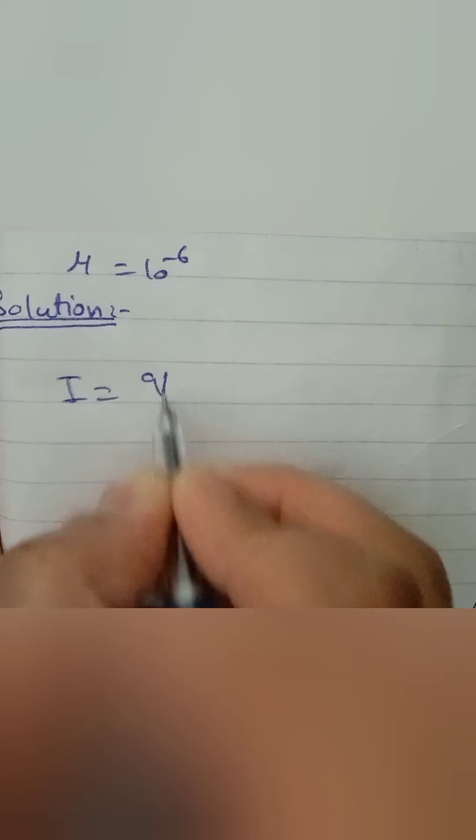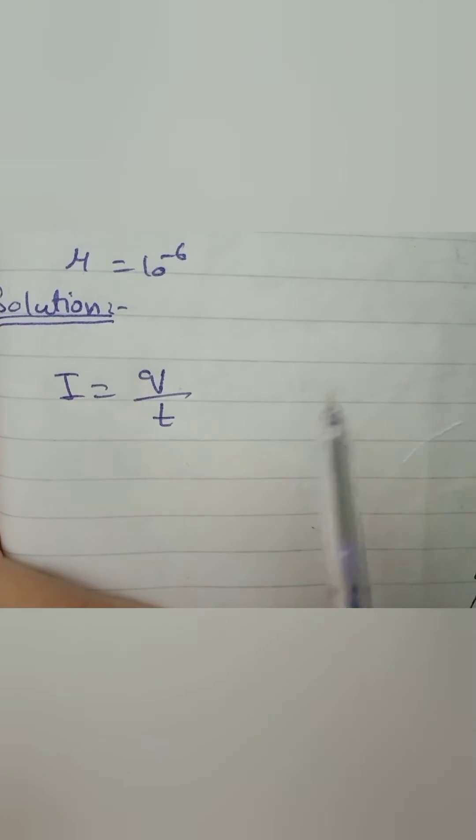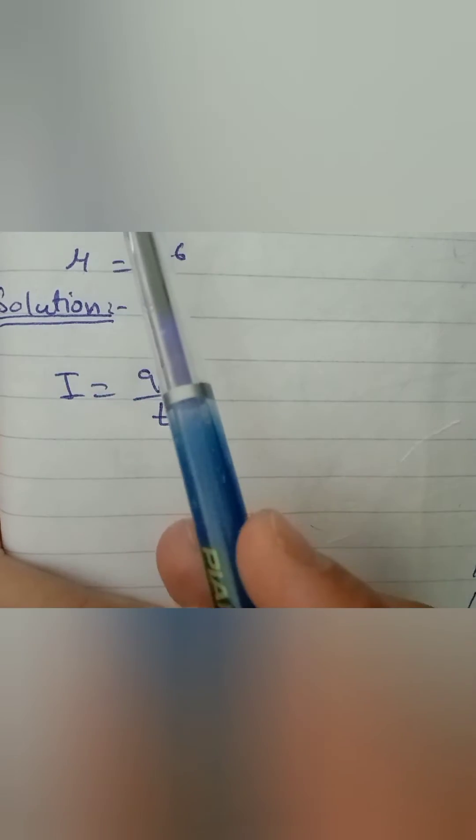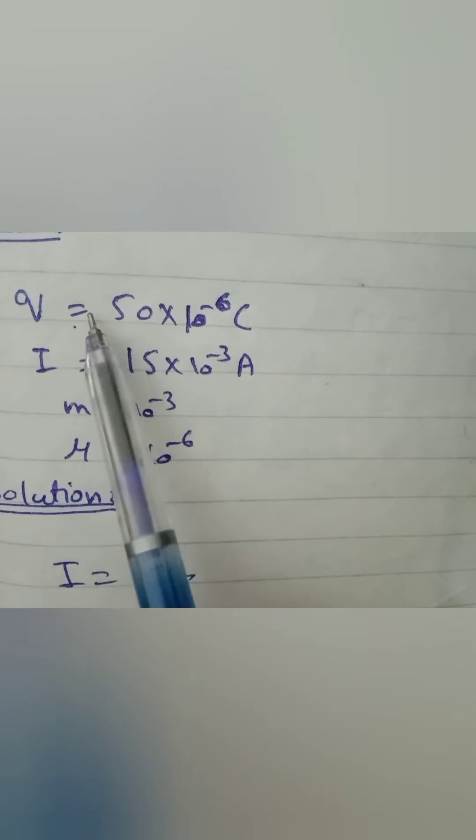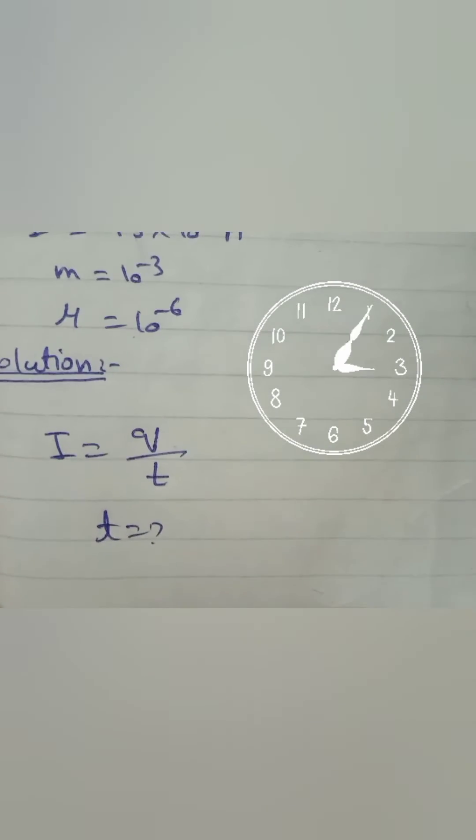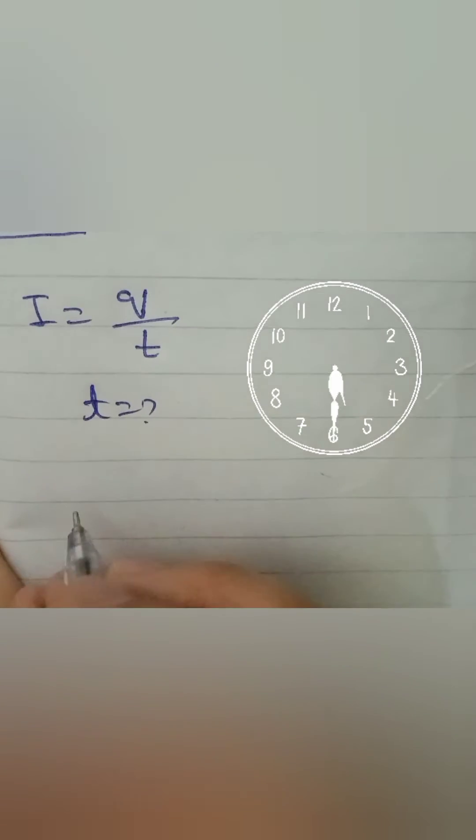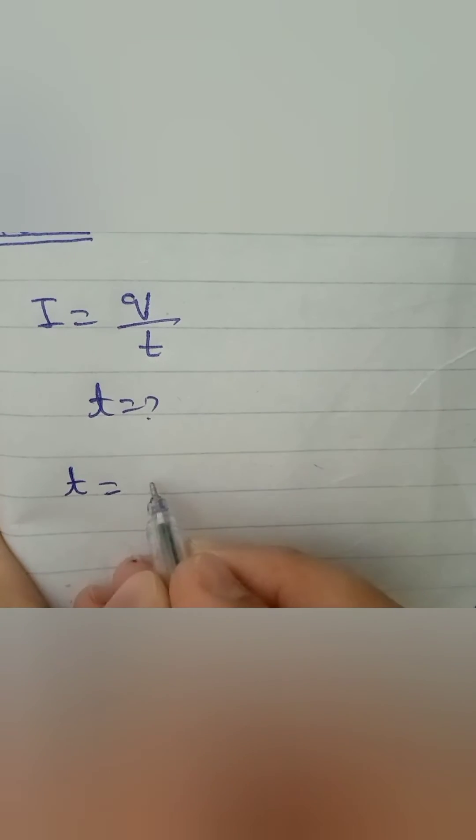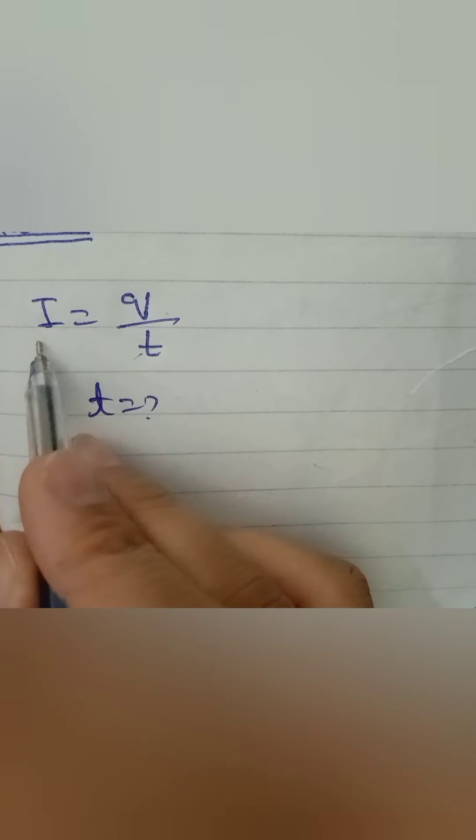We know the equation of current is I is equal to Q over t. What do we have unknown? We have to calculate time. Rearrange the equation. What we get is t is equal to Q over I.